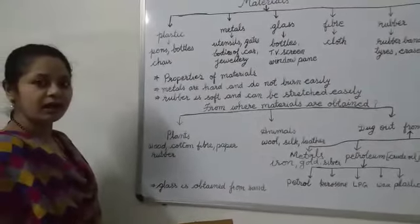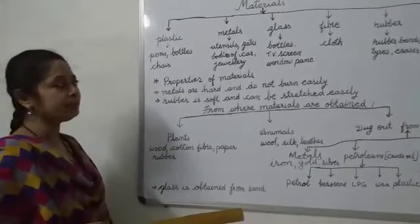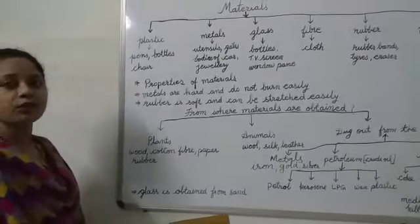Now, metals are iron, aluminum, steel. They are hard. And if you keep it over the fire, they do not burn.